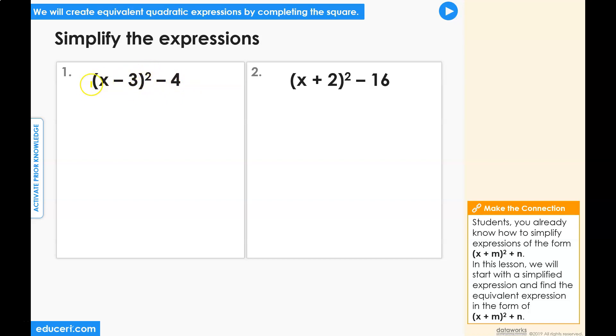To simplify this expression, we begin with the squared binomial. We can set up a box model for the multiplication x, negative 3 on the rows, x and negative 3 on the columns.